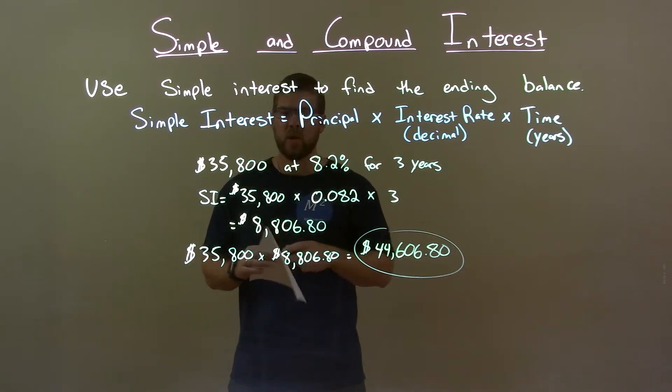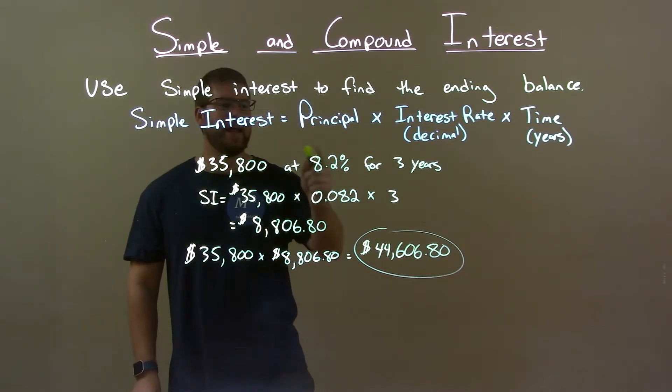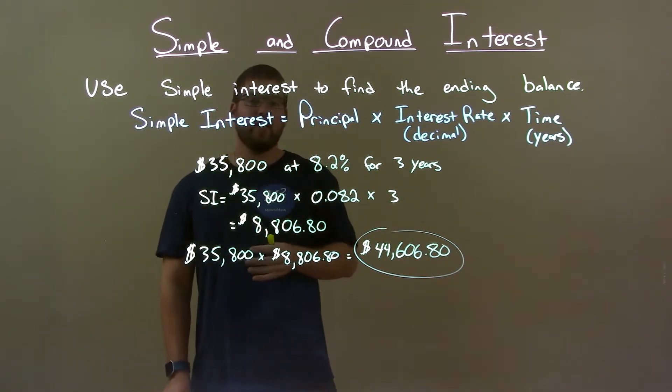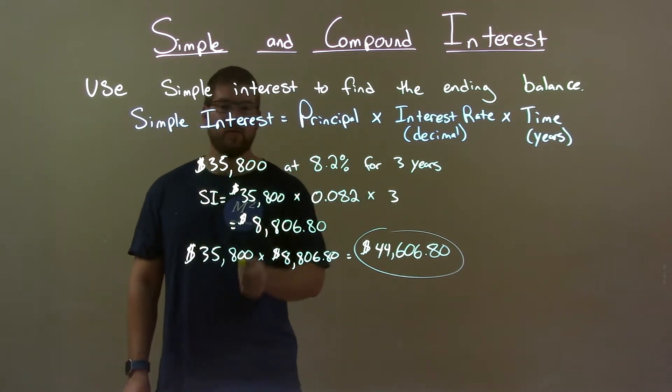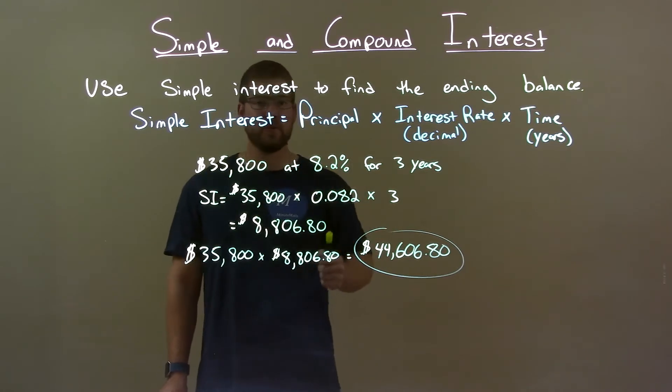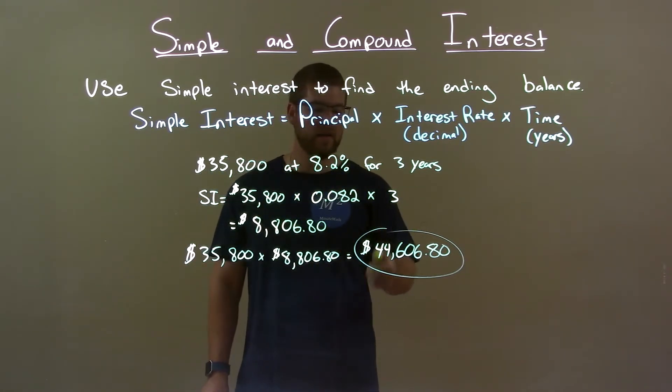So quick recap: We're given $35,800 at 8.2% for 3 years, and we need to find the ending balance using simple interest. Simple interest formula gave us a value of $8,806.80. Add that to our principal to get the final answer, our ending balance $44,606.80.